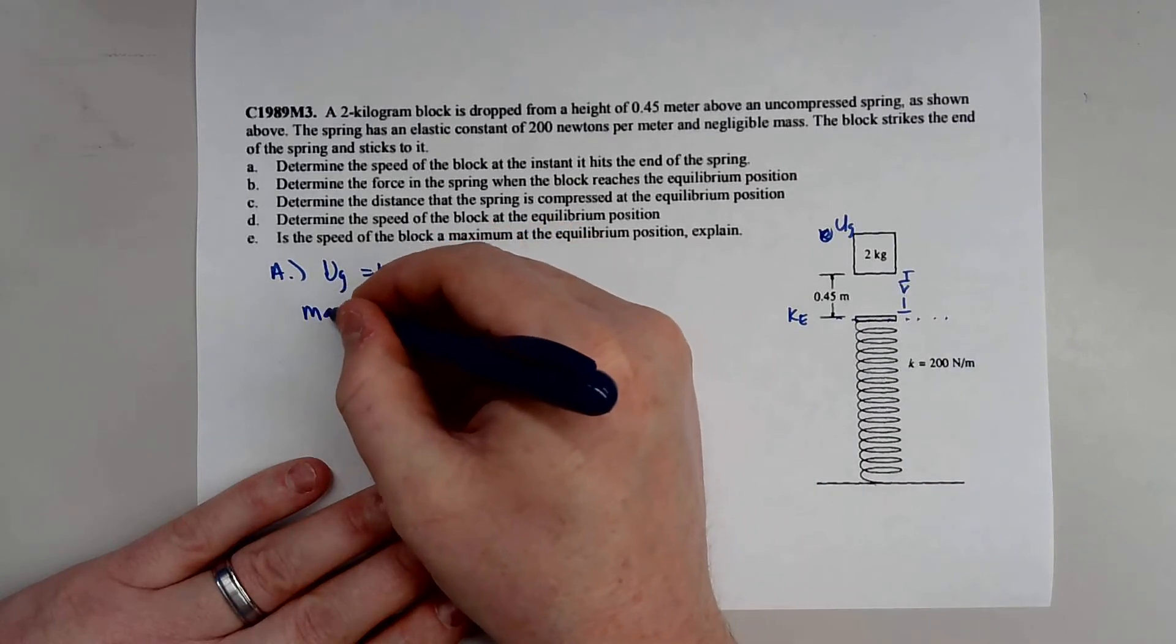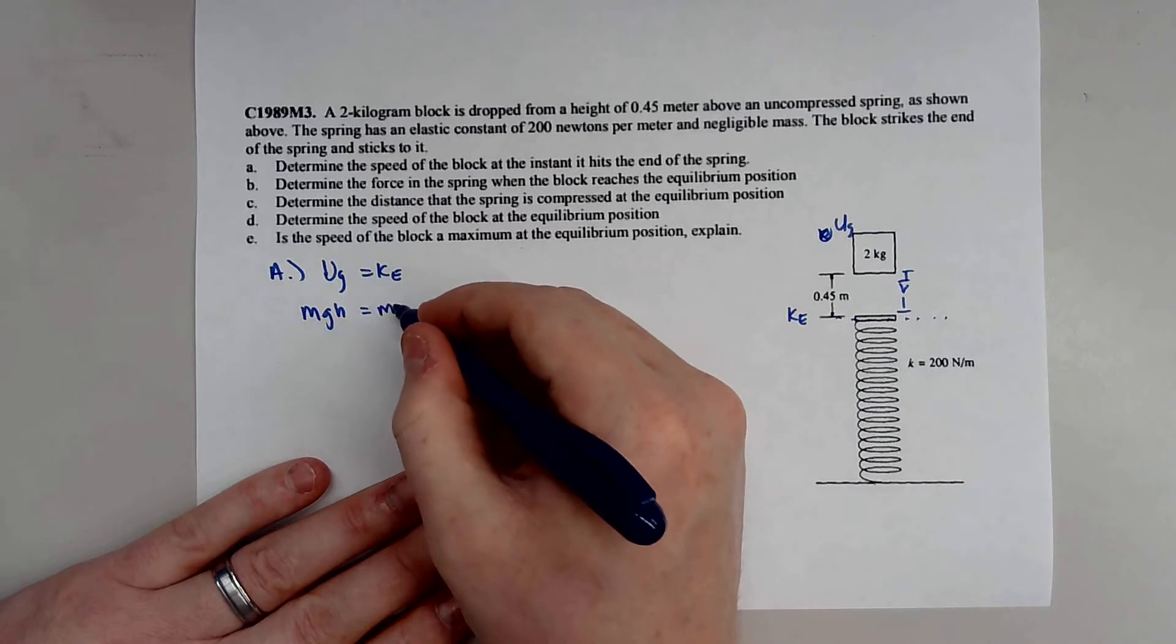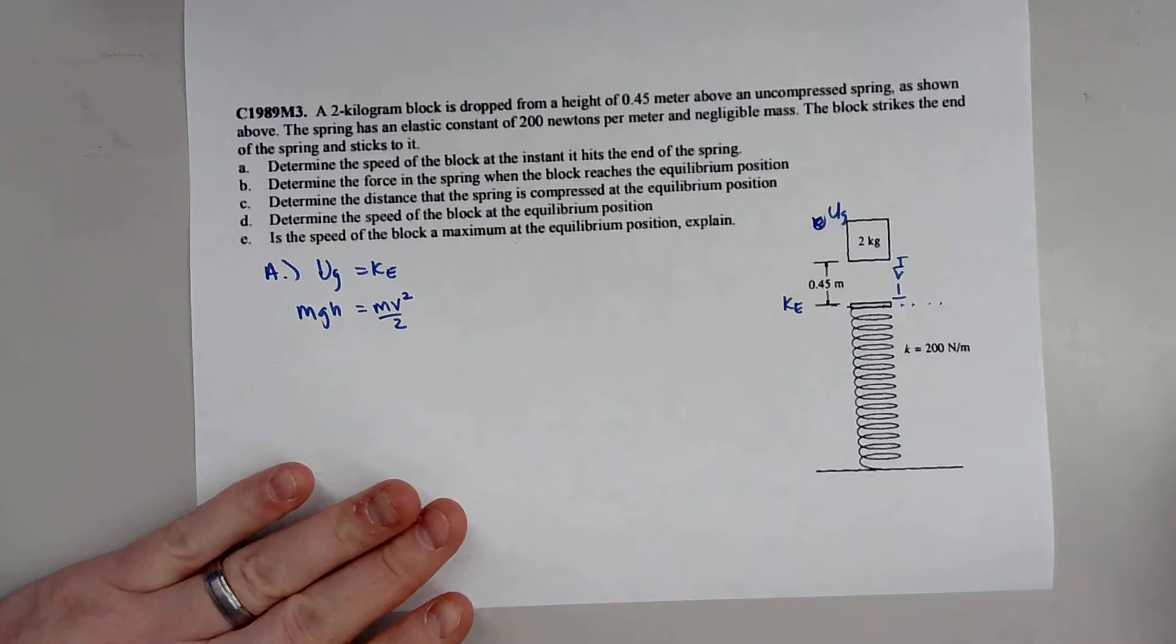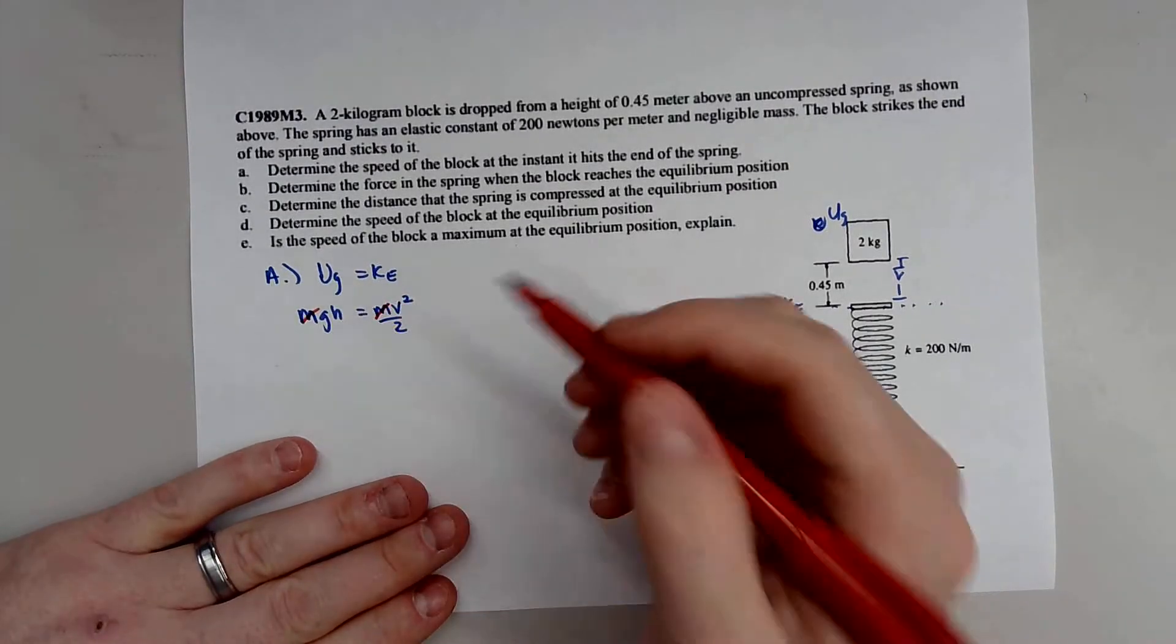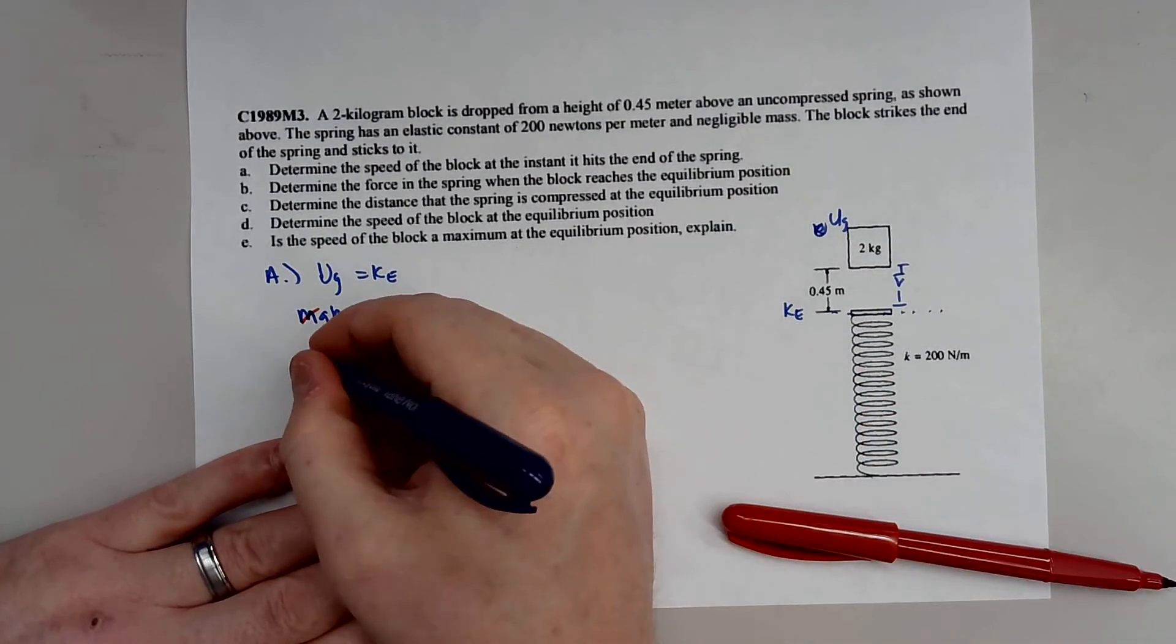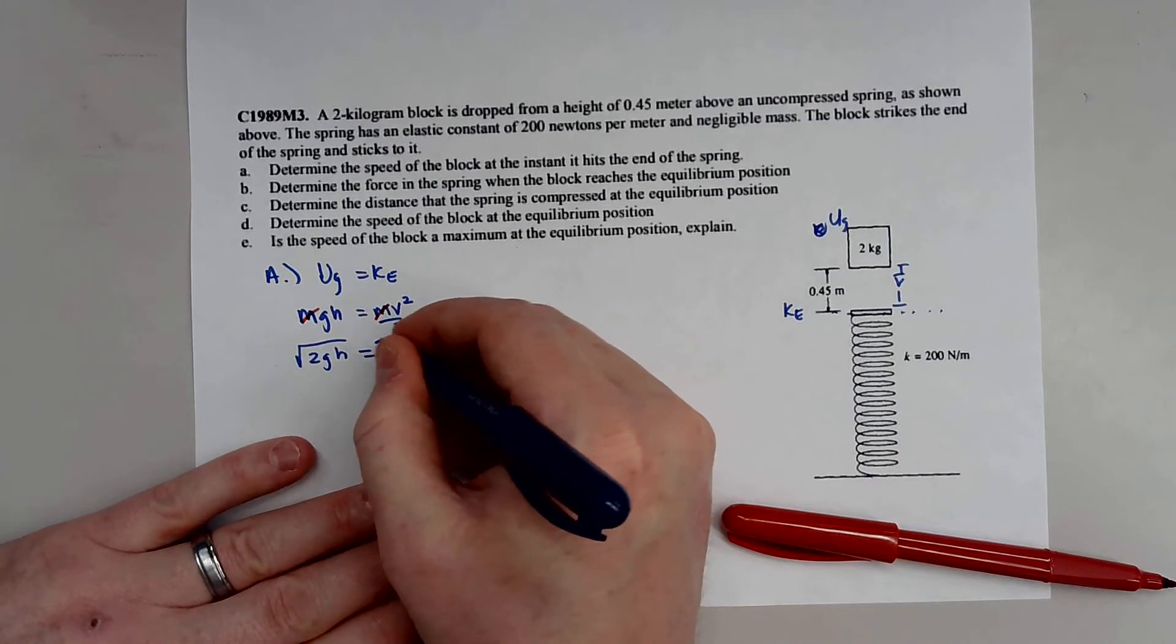So you know potential energy is just mass times gravity times height. Kinetic energy is mass times velocity squared all over 2. And then you can do a little bit of arithmetic and you see that the masses will cancel out. And that leaves you with this. The square root of 2 times gravity times height will be that velocity.